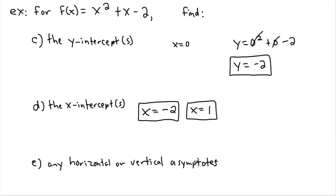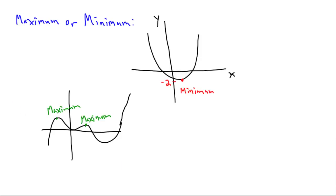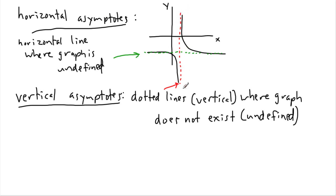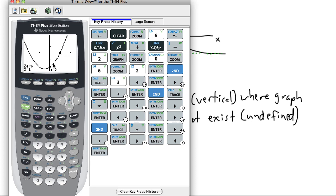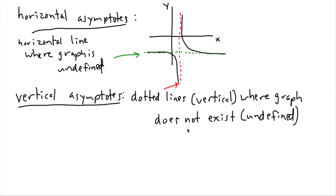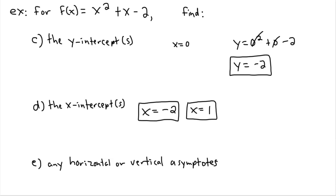Now, are there any horizontal or vertical asymptotes? Those are places where x or y values are not defined. In this case, there are no problems — this is a quadratic equation, so there are actually no asymptotes. There's no place where the graph is undefined. So we can say horizontal or vertical asymptotes: there are none. That's how we work with questions like this.